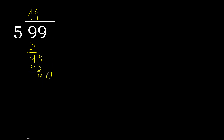There is no number, therefore complete — always complete with 0, here with a point. 0 point. 5 multiplied by 8 is 40. 40 minus 40 is 0. 0, therefore finish it.